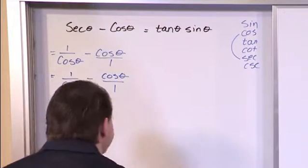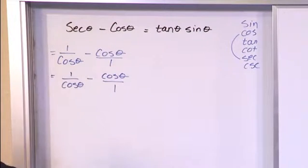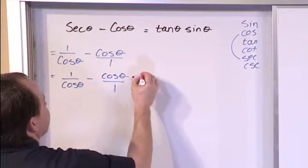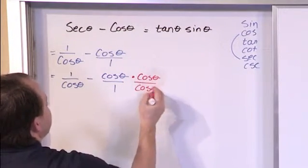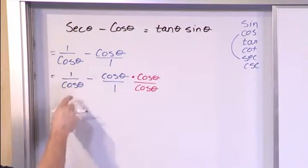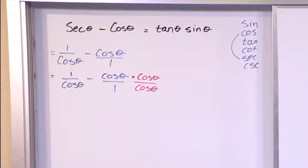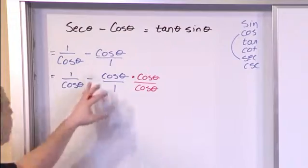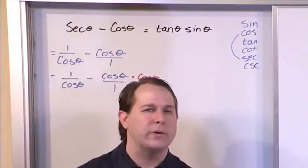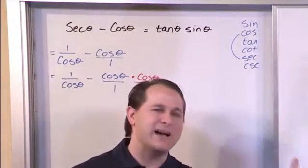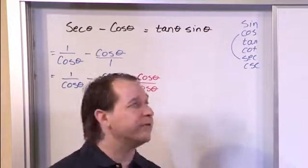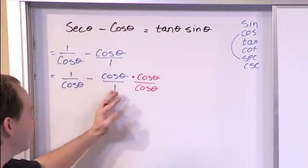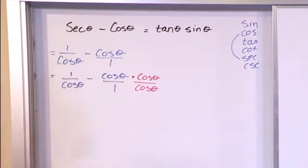What would we need to multiply this second fraction by to give me a common denominator? Well here I have a cosine. If I were to multiply this fraction by cosine of theta on the top and cosine of theta on the bottom then I would have a cosine on the bottom to match this cosine which would let me add those fractions together. Remember when you're dealing with fractions you can multiply the fraction by whatever you want as long as you multiply the top and the bottom by the same thing. Here we're doing it only because we want to subtract these guys and I have to have a common denominator to do it.